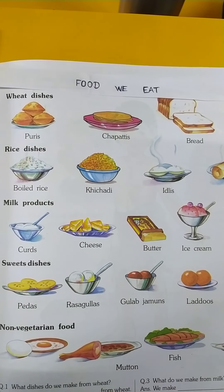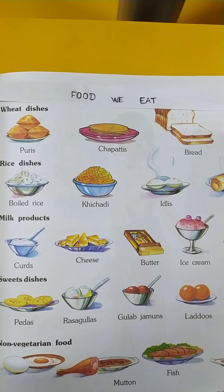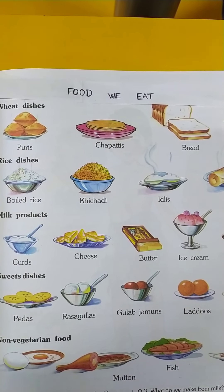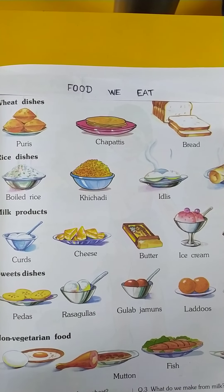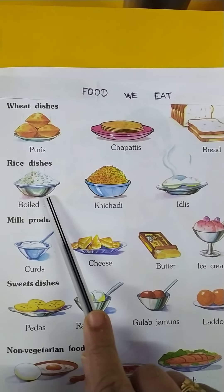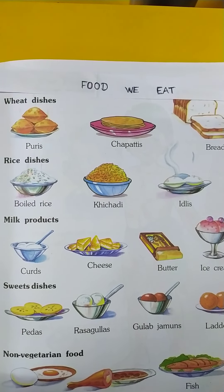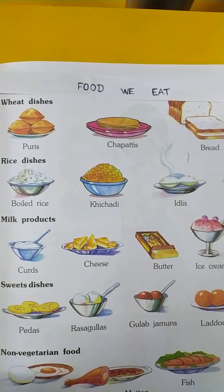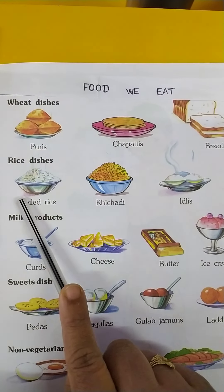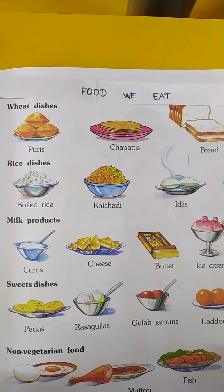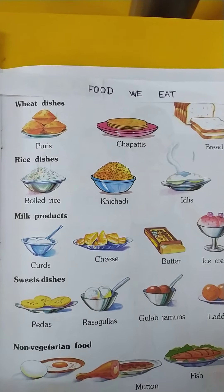What do we eat at night? We eat dinner at night. What do we eat for dinner? We eat rice, khichdi, vegetables, salad and curds for dinner.